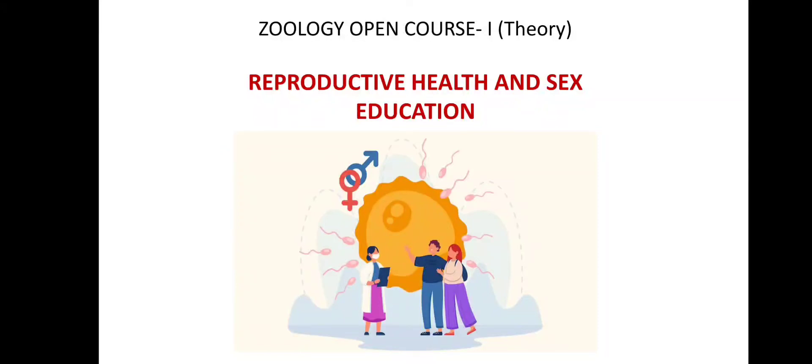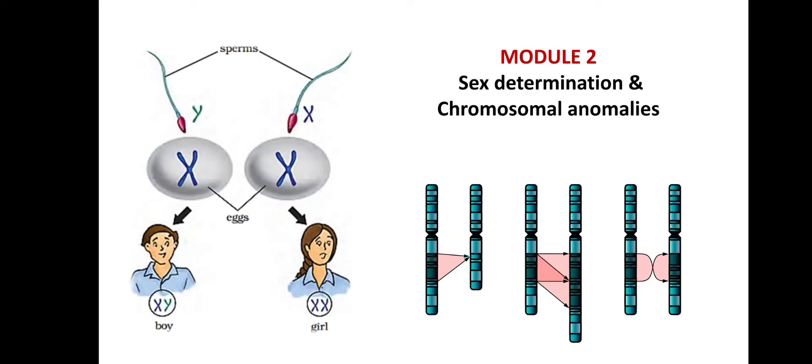Hi everyone. From today onwards we are starting a new lecture series on Calicut University Zoology Open Course. The paper name is Reproductive Health and Sex Education. I am beginning the session with Module 2, that is Sex Determination and Chromosomal Anomalies. So without further ado, let's jump into today's session.